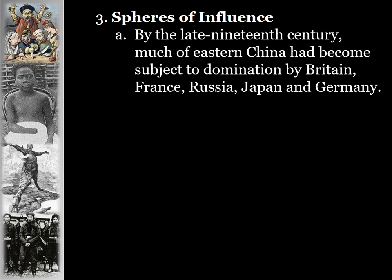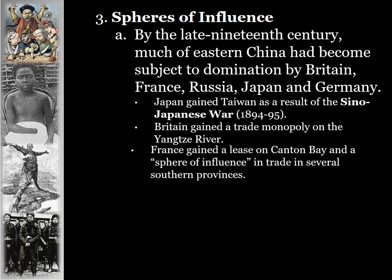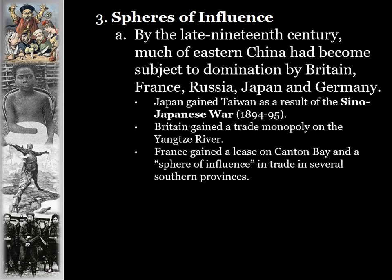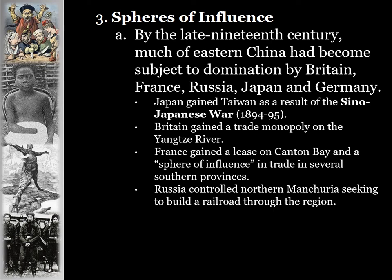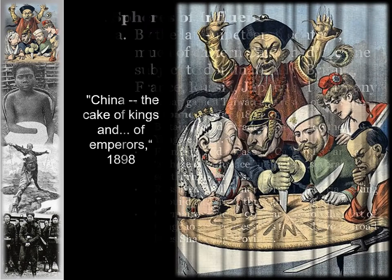By the late 19th century, much of eastern China had become subject to domination by the British, the French, the Russians, the Japanese, and the Germans — all having their own spheres of influence in China. Even though they may not control it politically, they controlled almost all of eastern China economically — a form of economic imperialism. Japan gained Taiwan from the Sino-Japanese War. Britain gained a trade monopoly on the Yangtze River. France gained a lease on Canton Bay. Russia controlled northern Manchuria, seeking to build a railroad through the region. Germany gained a 99-year lease on the port of Qingdao and concessions to build two railroad lines in the Shandong province.